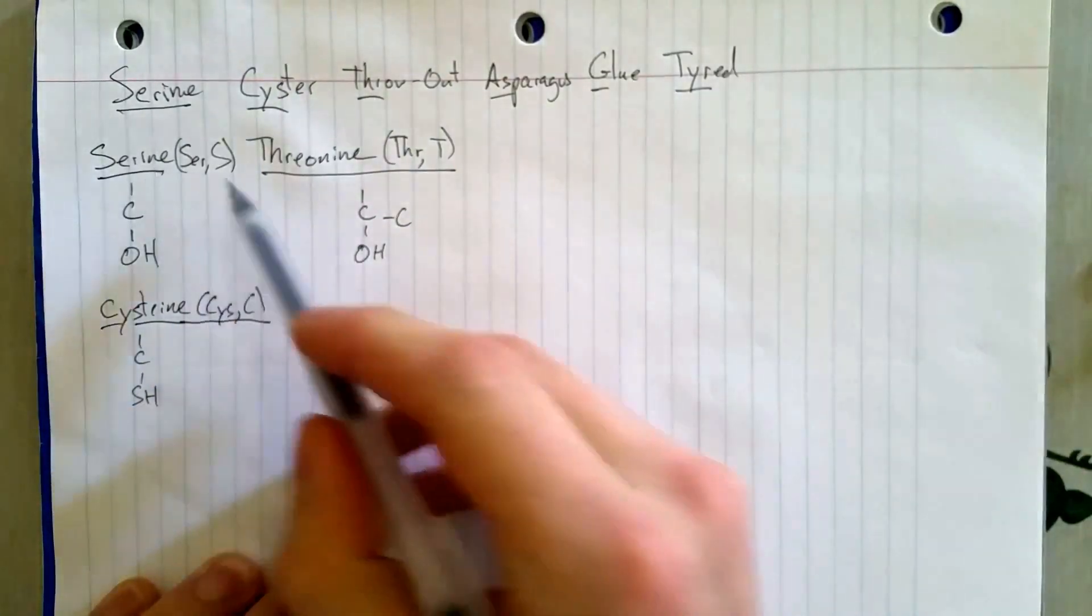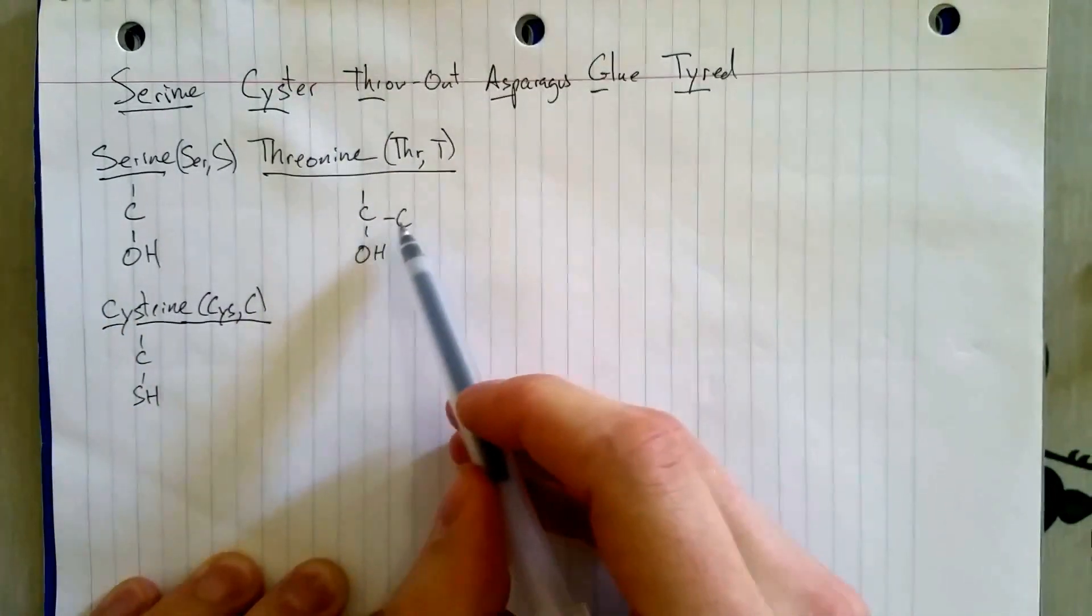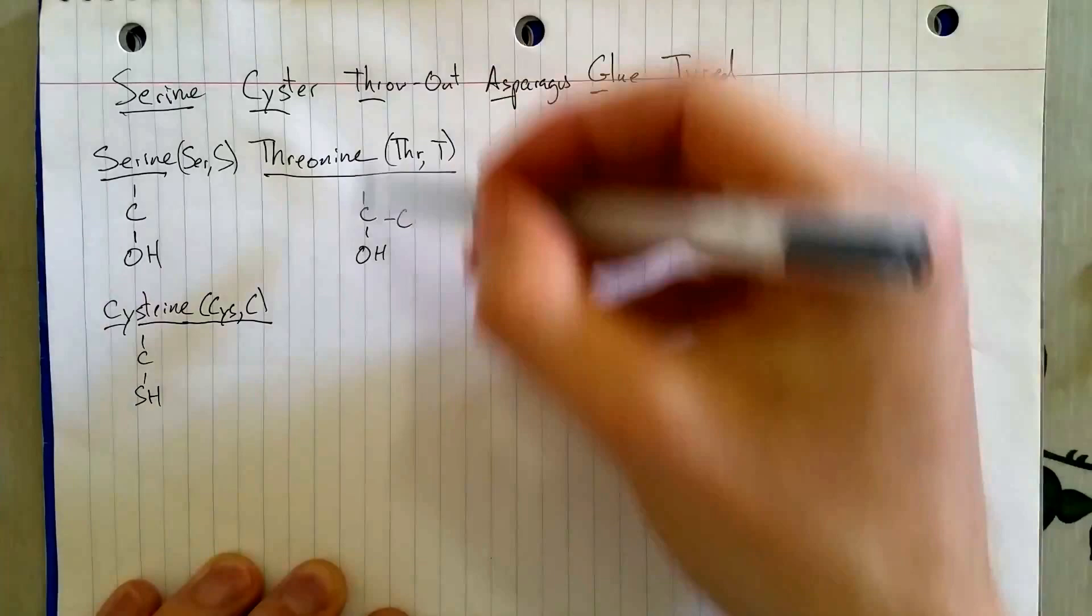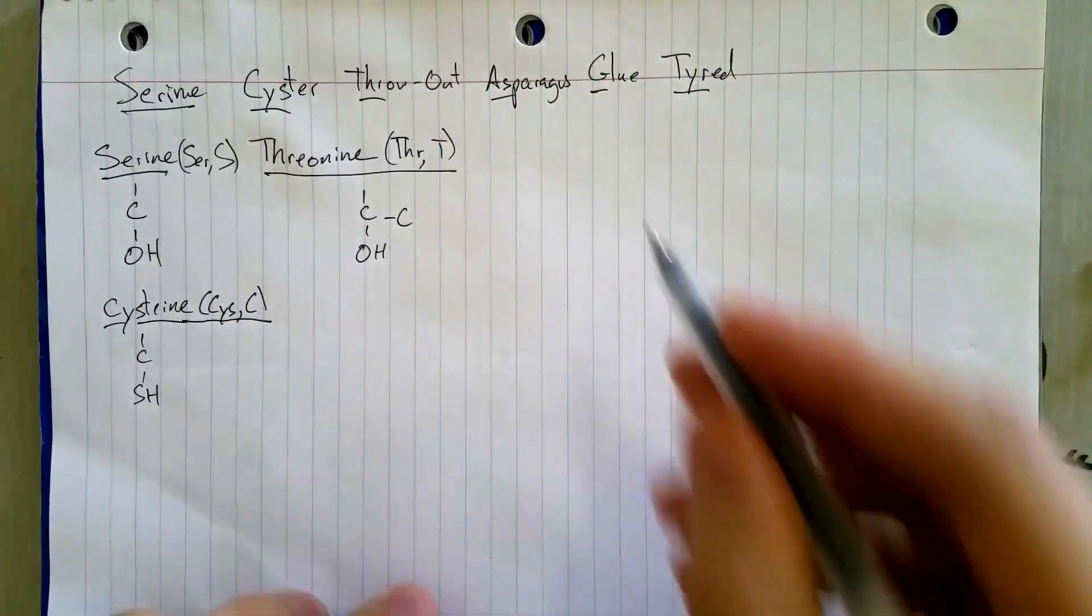So, threonine is a lot like serine. It's just got an extra carbon coming out of it, which sort of looks like a T. Great.